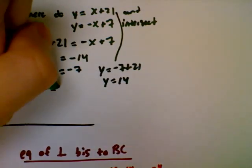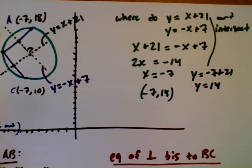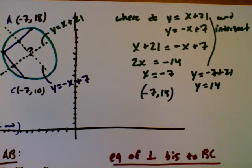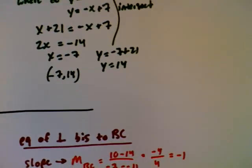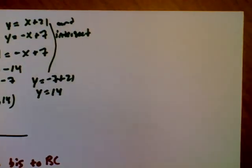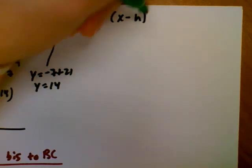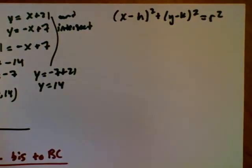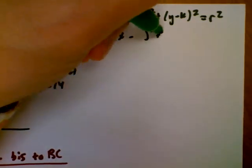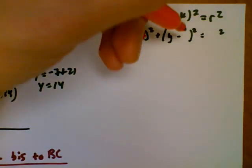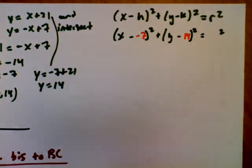So the center of the circle is the point negative 7, 14. Looking back at the circle, that makes sense. The equation of a circle is x minus h squared plus y minus k squared equals the radius squared. I can substitute in the center: x minus negative 7 and y minus 14. But I'm still missing the radius, so that's the last thing to find.